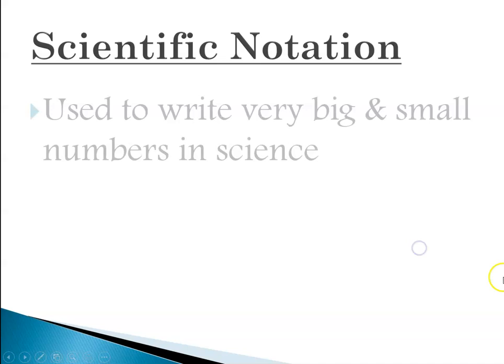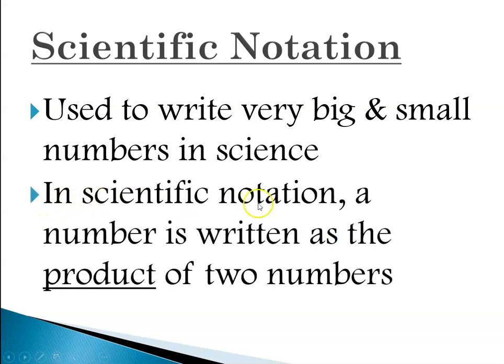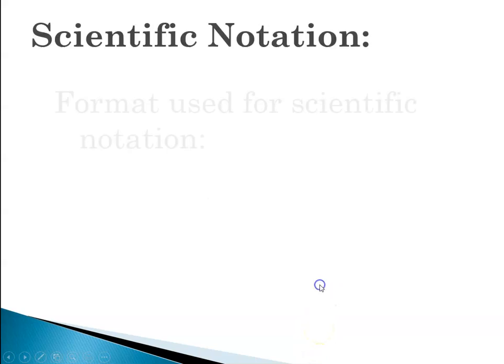So with scientific notation, it's a way that we use to write very big and very small numbers in science, and we're going to be encountering numbers like 6 times 10 to the 23 and 2 times 10 to the minus 19. So again, in scientific notation a number is written as the product of two numbers where the format looks like this: m times 10 to the n.